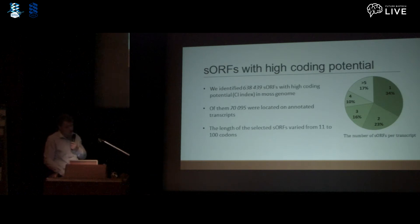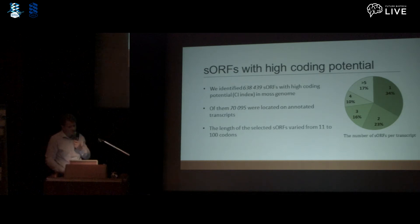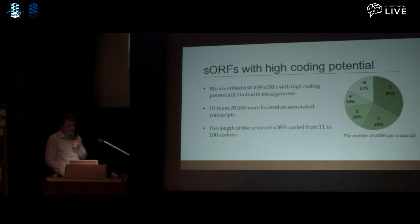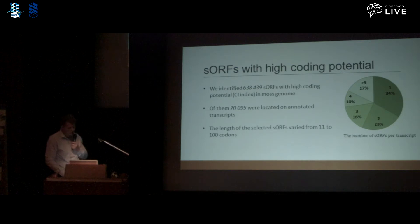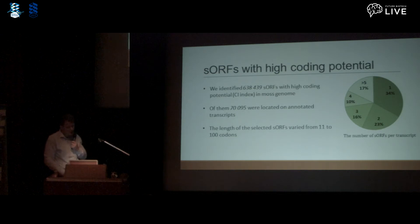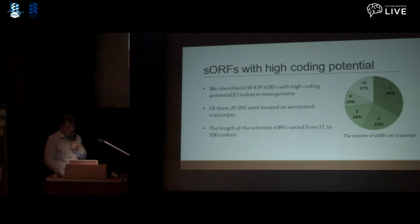We predicted sORFs in the moss genome using the bioinformatic tool sORF Finder, which allows identification of sORFs with high coding potential. These are single-exonic sORFs that start with an AUG codon and have a size of less than 100 codons. Using this approach, we identified approximately 600,000 sORFs with high coding potential in all regions of the moss genome. Of these, about 70,000 were located on annotated transcripts. The length of the selected sORFs varied from 11 to 100 codons.